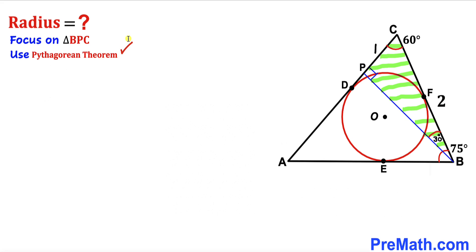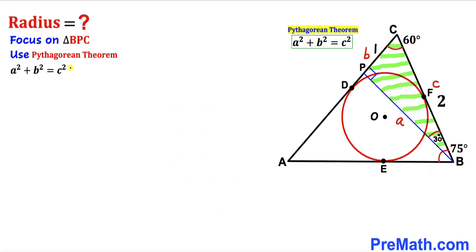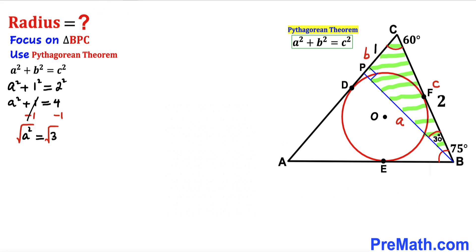Using the Pythagorean theorem: A² + B² = C². Let's call BC the longest leg C, and the unknown BP as side A, and PC as side B. Filling in: A² + 1² = 2², which gives A² = 3. Taking the square root of both sides, A = √3. So BP turns out to be √3 units.